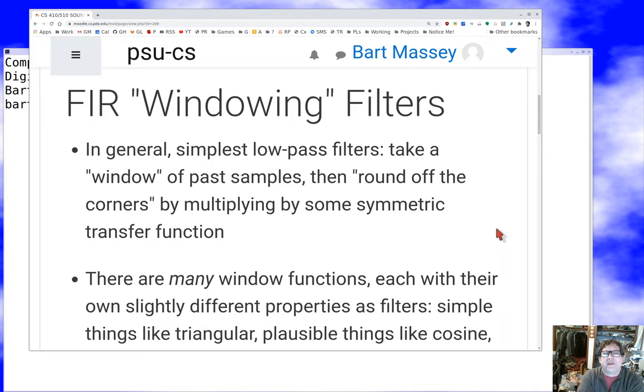The easiest way to make a low-pass filter is to use a transfer function that takes a window of past samples and then rounds off the edges so that some symmetric thing is the actual transfer function of the filter. If you do that, you'll get a filter with quite a lot of latency, but if you use enough taps, if your convolution is big enough, you can get a fairly nice shape for that filter.